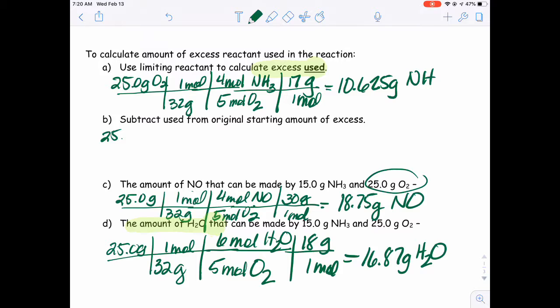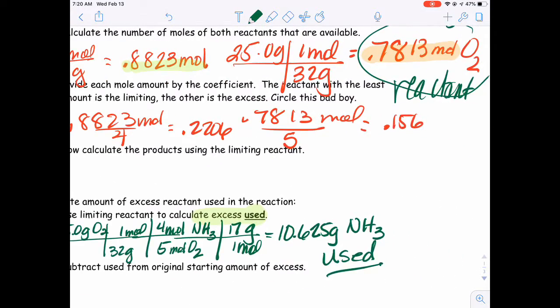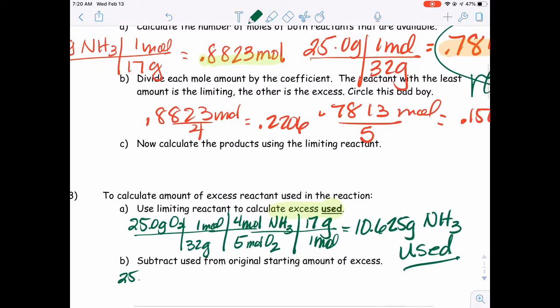And we get 10.625 grams. That is grams of ammonia used. That's what we used. If we have 25 grams of oxygen, we're going to use 10.625 grams of ammonia.